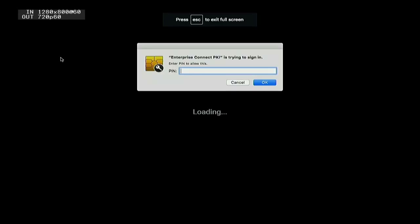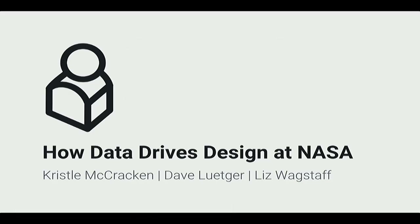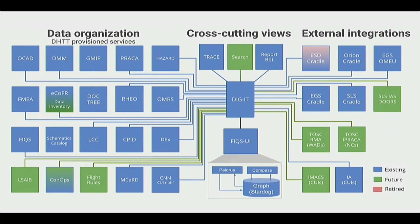Today we're going to be talking about how data drives design at NASA. My colleagues Dave and Liz are going to be walking through different case studies. We have a team of about 30 researchers, designers, engineers, and QA, and also 30-plus websites and integrations that support both the manned spaceflight program and the International Space Station. All the boxes on this graph are current or planned websites, and Digit is our integration platform that integrates all the sites together.